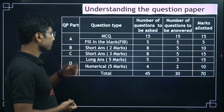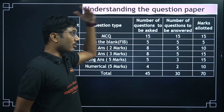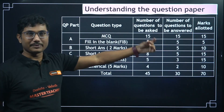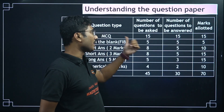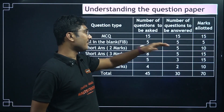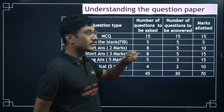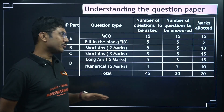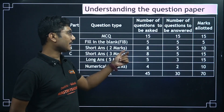First, let us understand the question paper. There will be 15 MCQs — all MCQs are important and you have to answer them all. For fill in the blanks, there will be 5 blanks with 6 options given, so one extra option will be provided. You have to answer all 5 fill-in-the-blank questions.